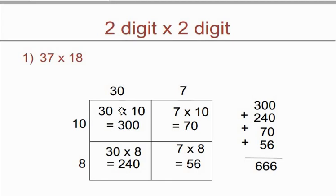Same way take 30 from here and 8 from here — you will get answer 240 when you do the multiplication of 30 with 8. Same way take 7 from here and 8 from here — when you make a multiplication of 7 with 8 you will get 56. Now make a summation of these 4 numbers: 300 plus 240 plus 70 plus 56, so you will get answer 666.